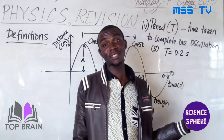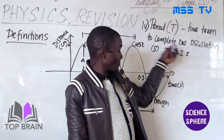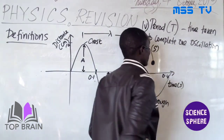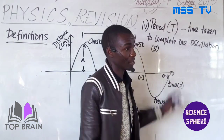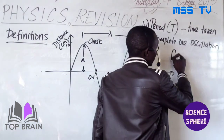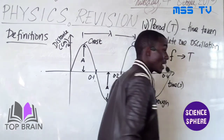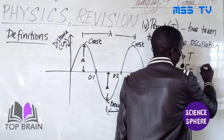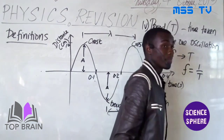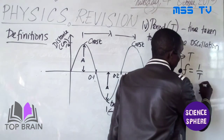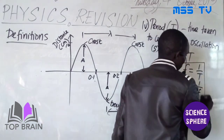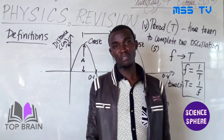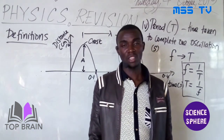There is a connection between frequency and period: frequency equals 1 over T, and equally T equals 1 over f. So if you have the frequency, you can get the periodic time, and if you have the periodic time, you can equally get the frequency.